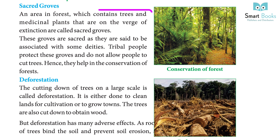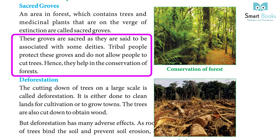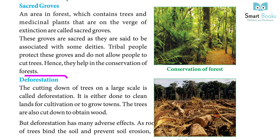An area in the forest which contains trees and medicinal plants that are on the verge of extinction is called a sacred grove. These groves are sacred as they are said to be associated with some deities. Tribal people protect these groves and do not allow people to cut trees, thus helping in the conservation of forests.